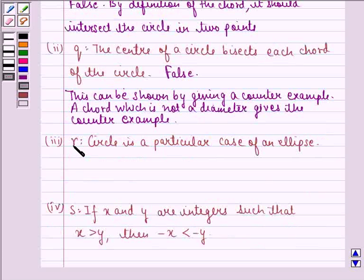Now, the third part is the statement R that says that circle is a particular case of an ellipse. The answer would be that this statement is true.